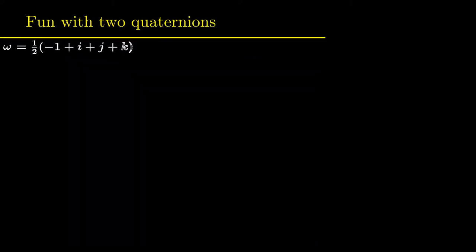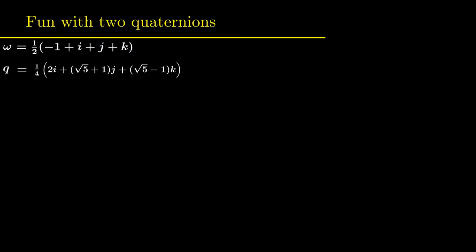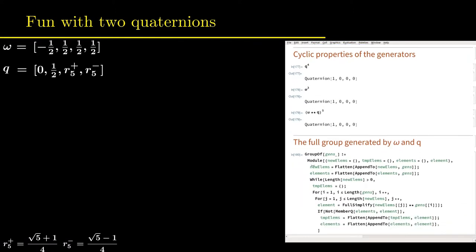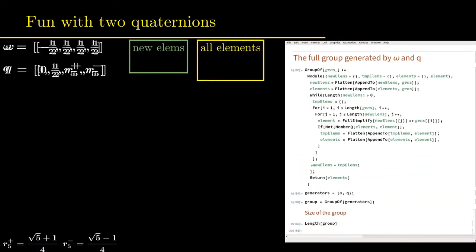What happens when omega and q are multiplied with each other in random sequences? To find out, the quaternions are denoted more compactly. Only the coefficients are collected in components. And shortcuts for the expressions containing the root of five are introduced. An auxiliary function is used to find all possible products. In this module, one starts with omega and q as new elements.